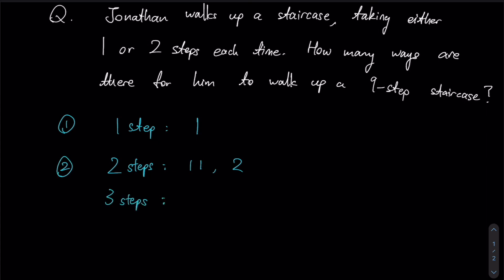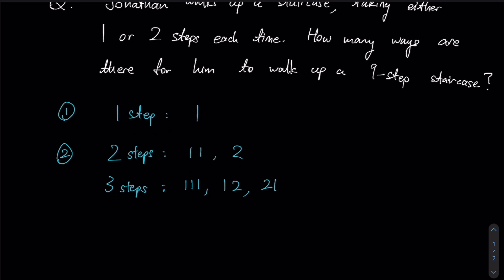So what about if we extend it to three steps instead? We would have one, one, one as a possible combination, one, two as a possible combination, and even two, one as a possible combination because I could swap this order around, right? And therefore that constitutes another three ways.